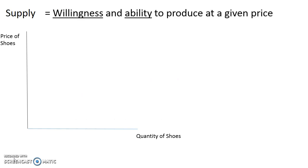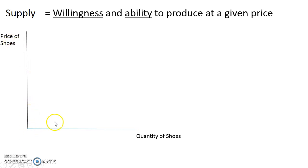Supply is the willingness and ability to produce at a given price. When we talk about supply, we will always have on the vertical axis the price, and along the horizontal axis we have the quantity.